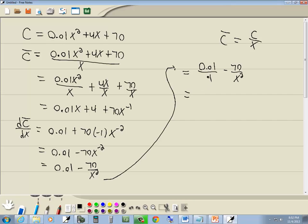In our first fraction we'll multiply the top and bottom by x squared. And we've got 0.01x squared over x squared minus 70 over x squared, which then gives us 0.01x squared minus 70 over x squared. And that's our derivative.